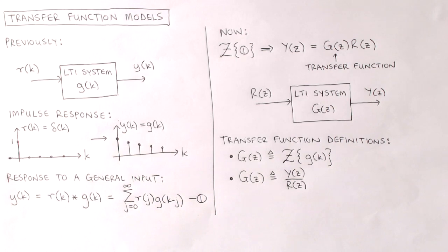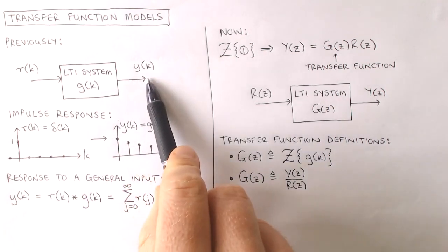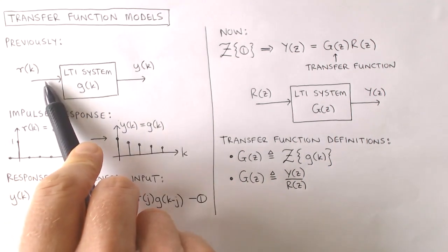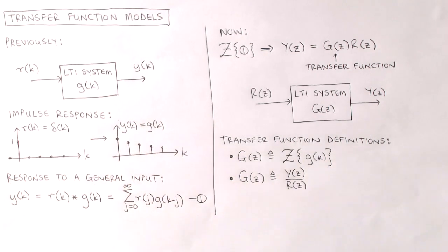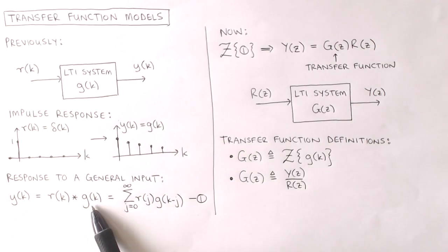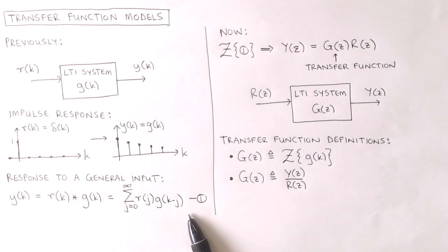We have previously seen that the output of the system in response to a general input is given by the discrete convolution of the input with the impulse response, where the discrete convolution operation is given by this infinite sum.